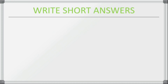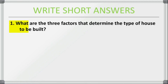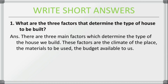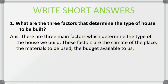Now let us see short answer questions. First question: what are the three factors that determine the type of house to be built? The answer is there are three main factors: the climate, the material to be used, and the budget available to us. These factors determine the type of house that we build.